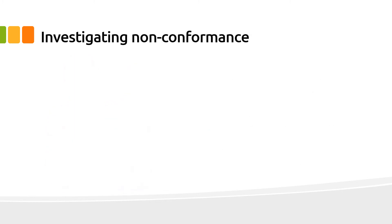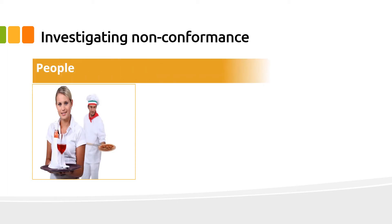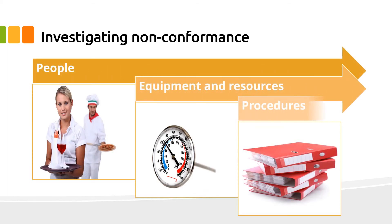If you have a non-conformance in food safety, here are some suggestions on how to gather the information to investigate the non-conformance. You can talk to your staff, you can look at the equipment and resources available, and you can look at the procedures and work instructions.